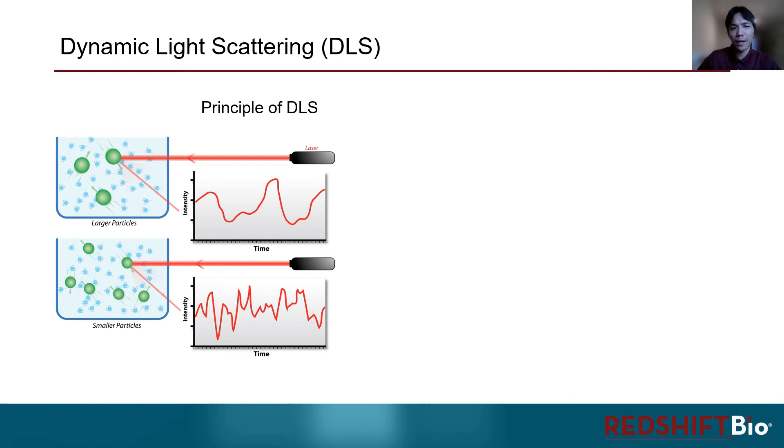So how does DLS work? In a typical DLS measurement, particles in a solution are exposed to a laser. Then the scattered light after hitting the particles is measured directly by a detector. The intensity of the light being scattered will change over time as the particles continue to diffuse. The speed of these intensity fluctuations depends on the diffusion rate of the particles.